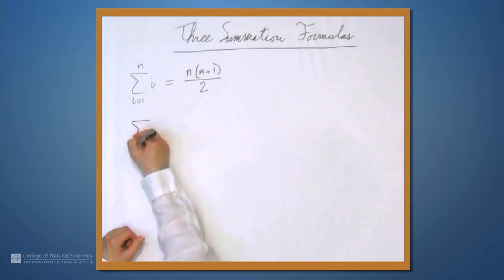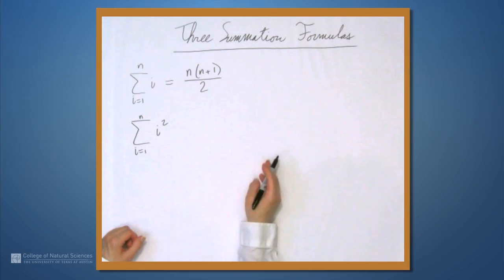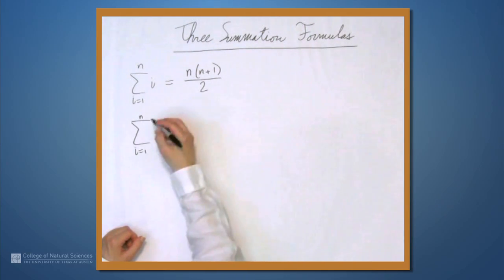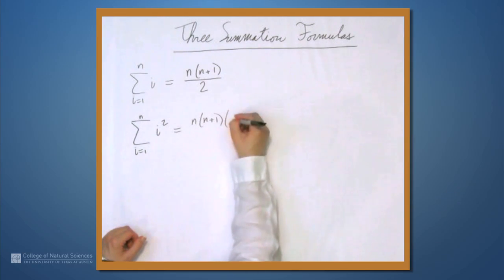Another one is the sum from i equals 1 to n, not just of i, but of i squared. So 1 squared plus 2 squared plus 3 squared and so on, all the way up to n squared. This is n times n plus 1 times 2n plus 1, all over 6.